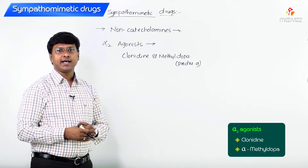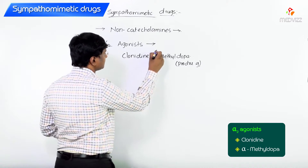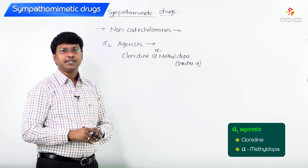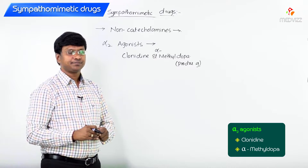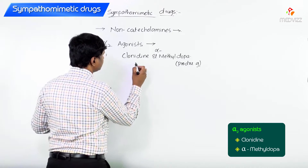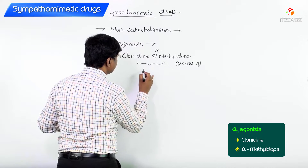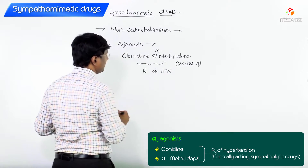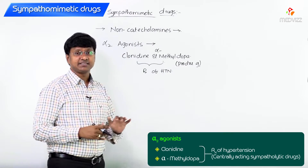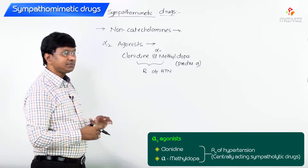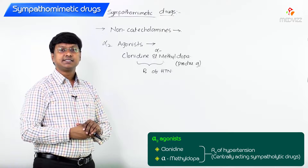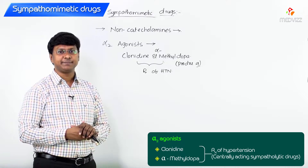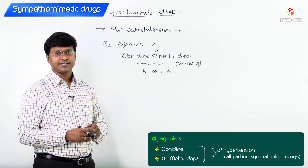Clonidine and alpha-methyldopa are alpha-2 agonists. Where are they used? They are used in the treatment of hypertension. The mechanism is that they are centrally acting sympatholytic drugs, and in that way they are used as antihypertensive drugs.